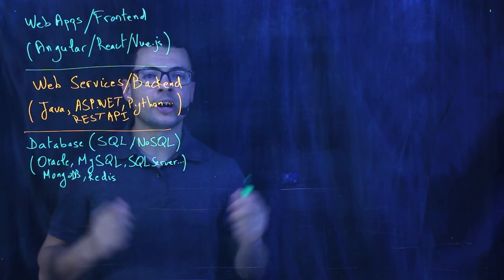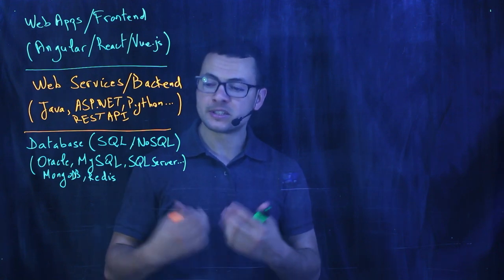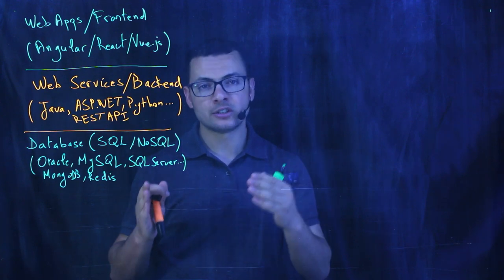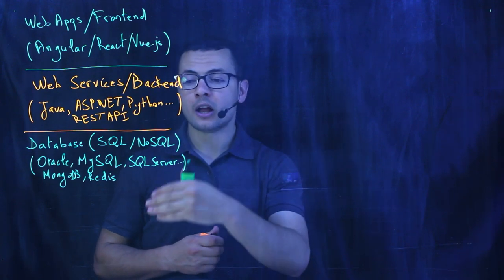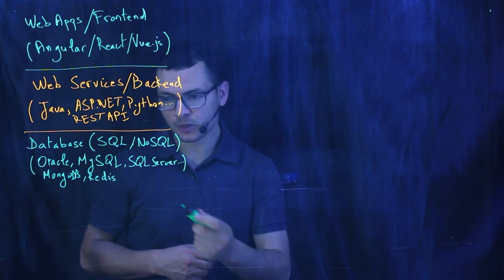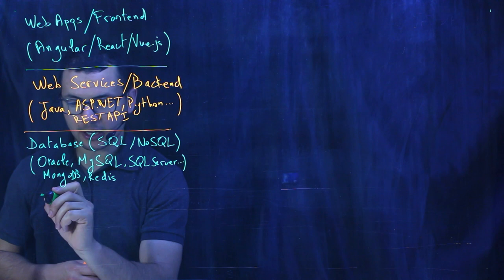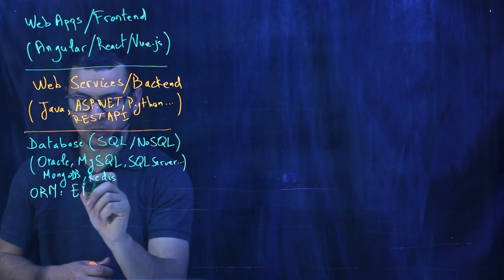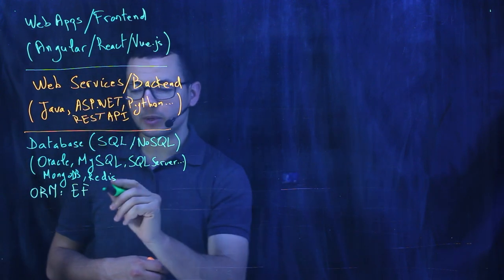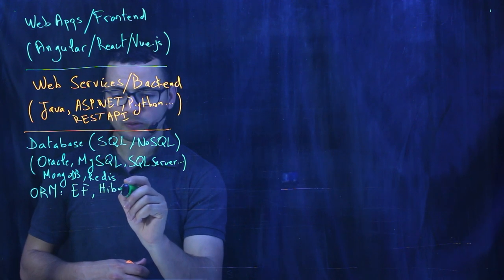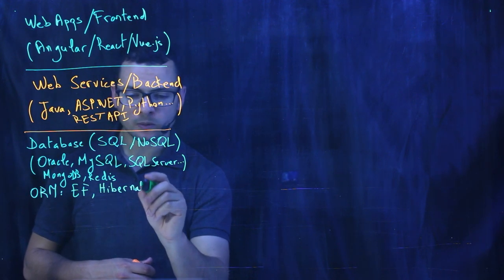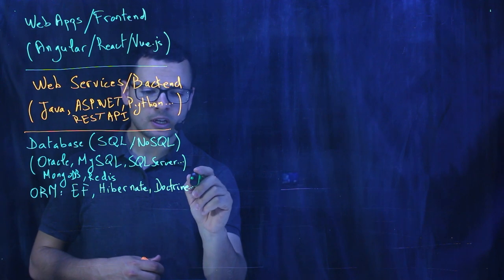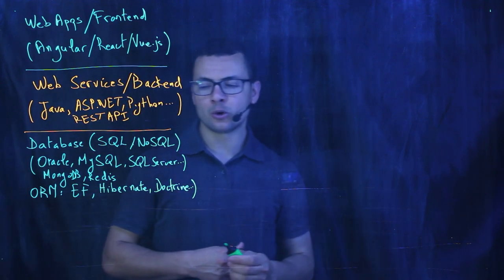We can write SQL scripts against Oracle or SQL Server, but we can also use what we call ORM — Object-Relational Mapping — in order to make manipulating the database easier. Instead of writing those SQL scripts, we'll be using an object-oriented language to query the database. We can use ORM technology like Entity Framework for .NET applications, Hibernate for Java applications, or Doctrine for PHP-based apps. We have a large list of those ORMs.